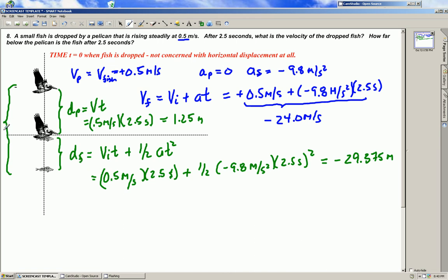To get the entire dimension we have to add these two numbers together so the delta d total, and you have to take the absolute value because one's moving up and one is moving down. So you have 1.25 meters the distance the pelican moved up plus 29.375 meters the distance the fish moved down for a total of 30.625 meters.